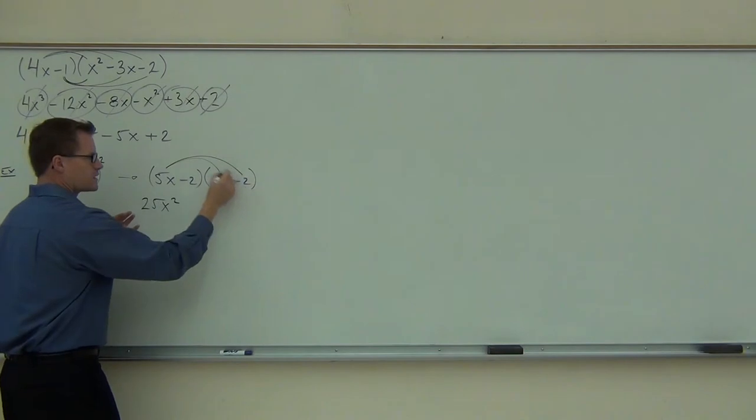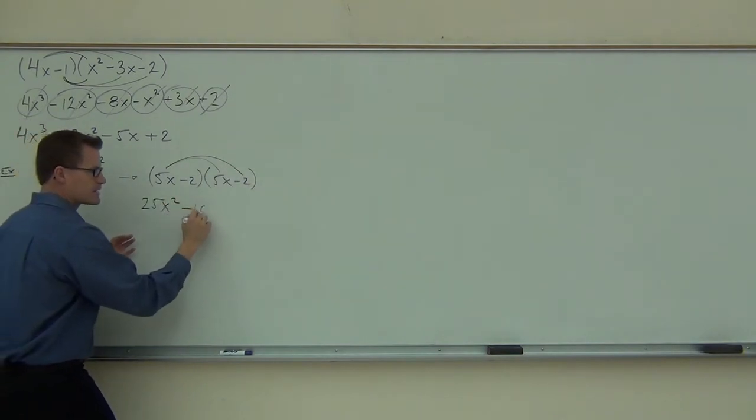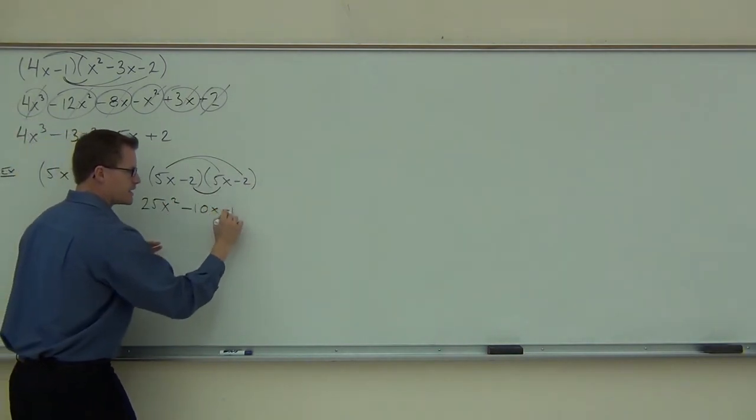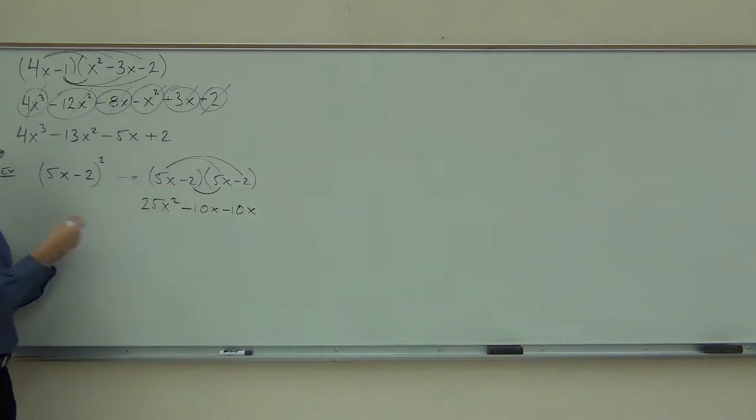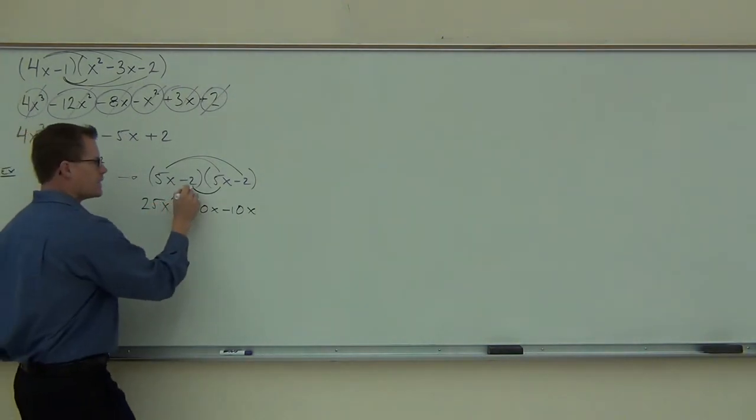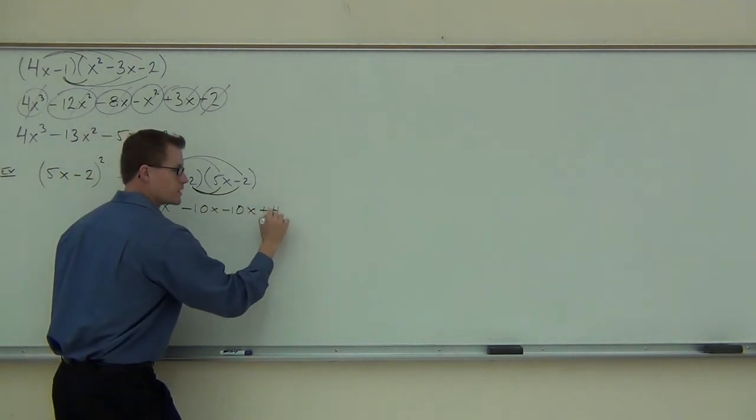The important part, though, is right in the middle when we do this. We're going to get a minus 10x and another minus 10x. That wouldn't show up if you just squared the first one and squared the second term. That wouldn't happen. And then we will get a plus 4 at the end.